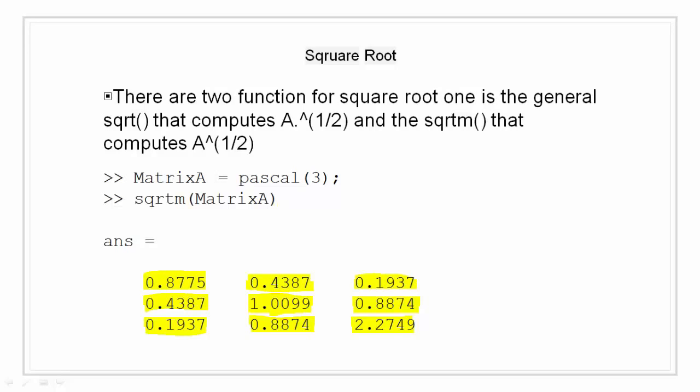In the example shown, I have taken a matrix A and then a square root of matrix as a whole. So I get an answer that is highlighted in yellow.